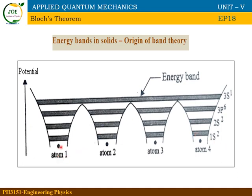Consider a solid: atoms are arranged in a periodic structure. This is a periodic arrangement of atoms — here we have 4 atoms. Each atom has a nucleus, with electrons occupying orbitals. This is the first orbital, the second orbital, and the third orbital.